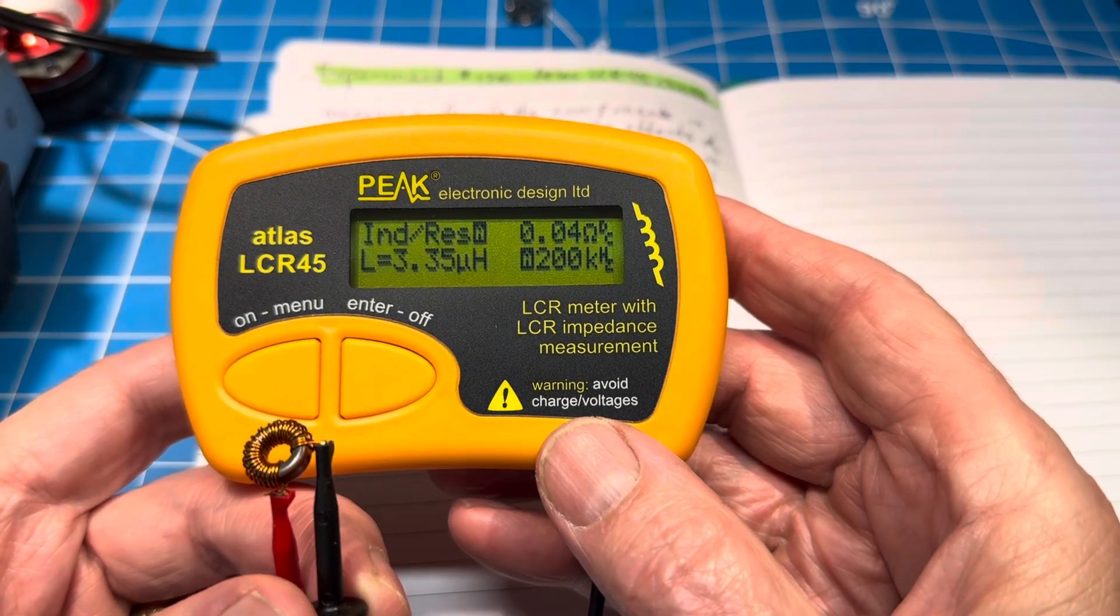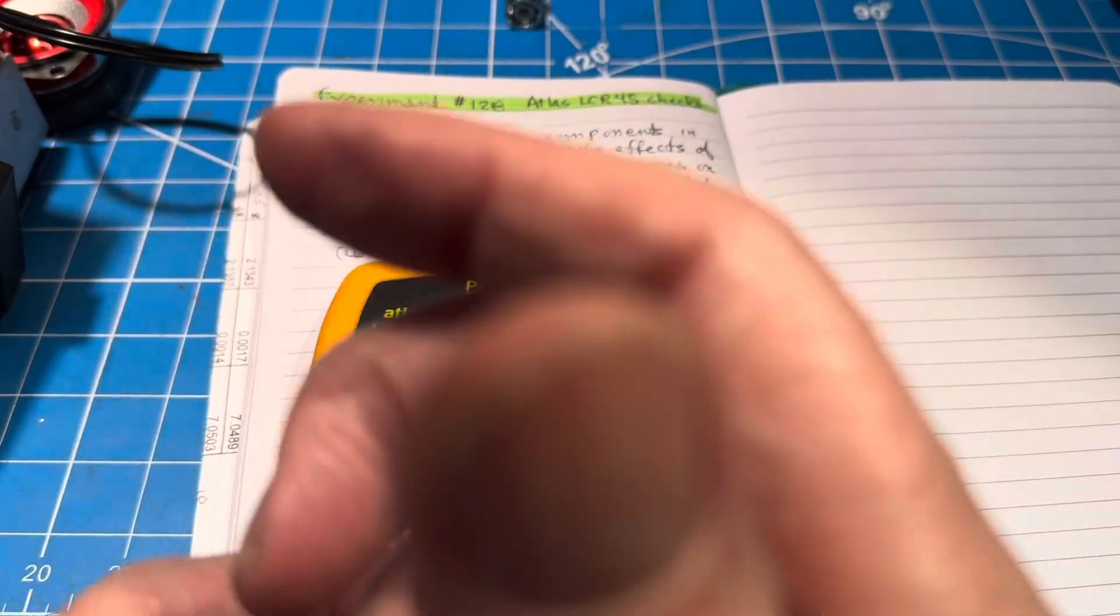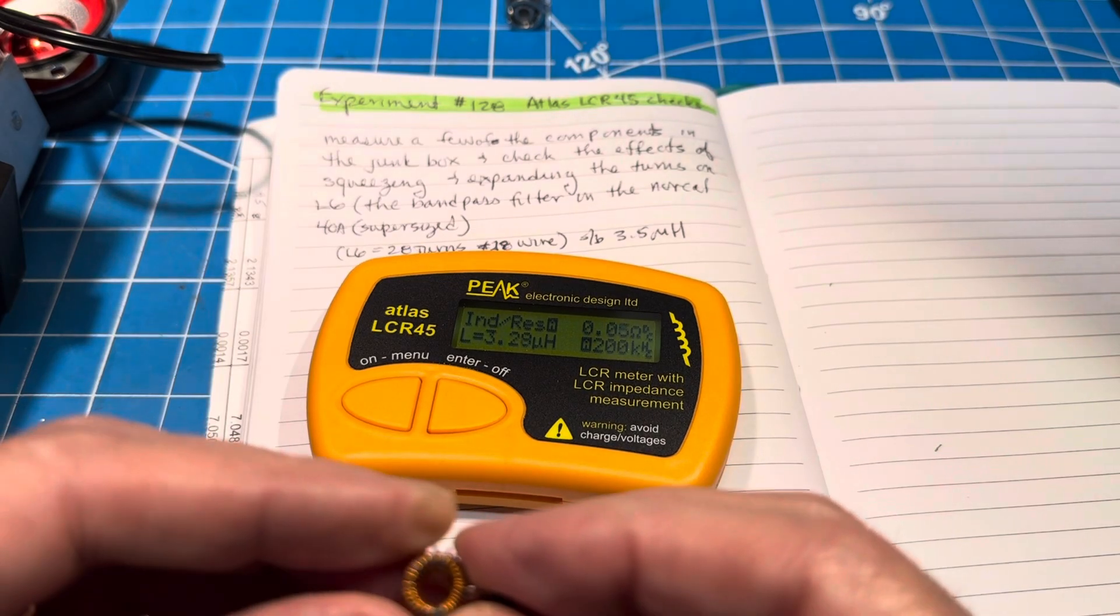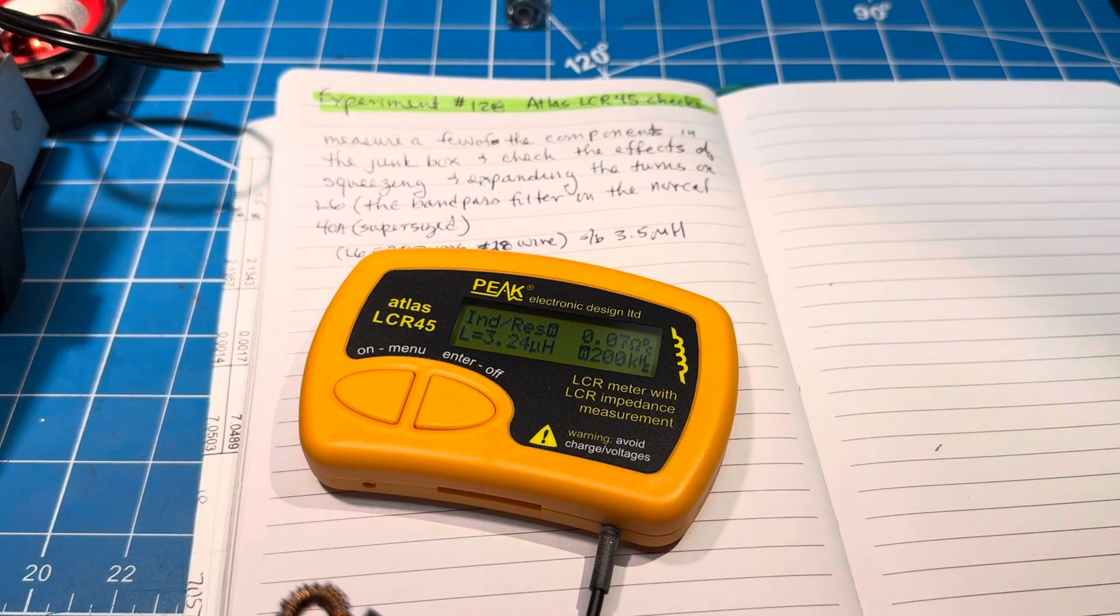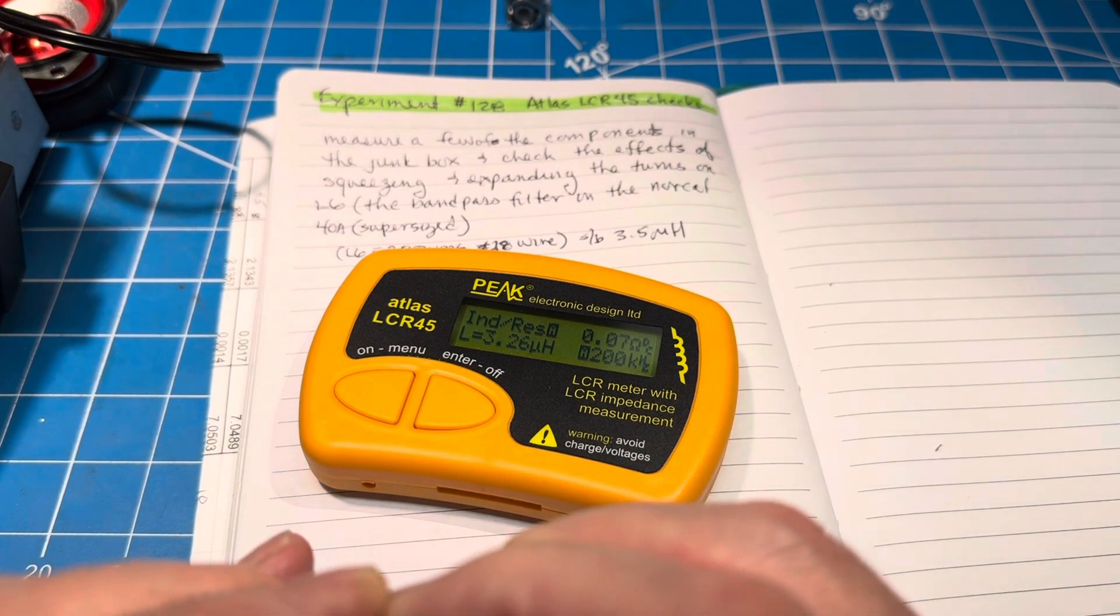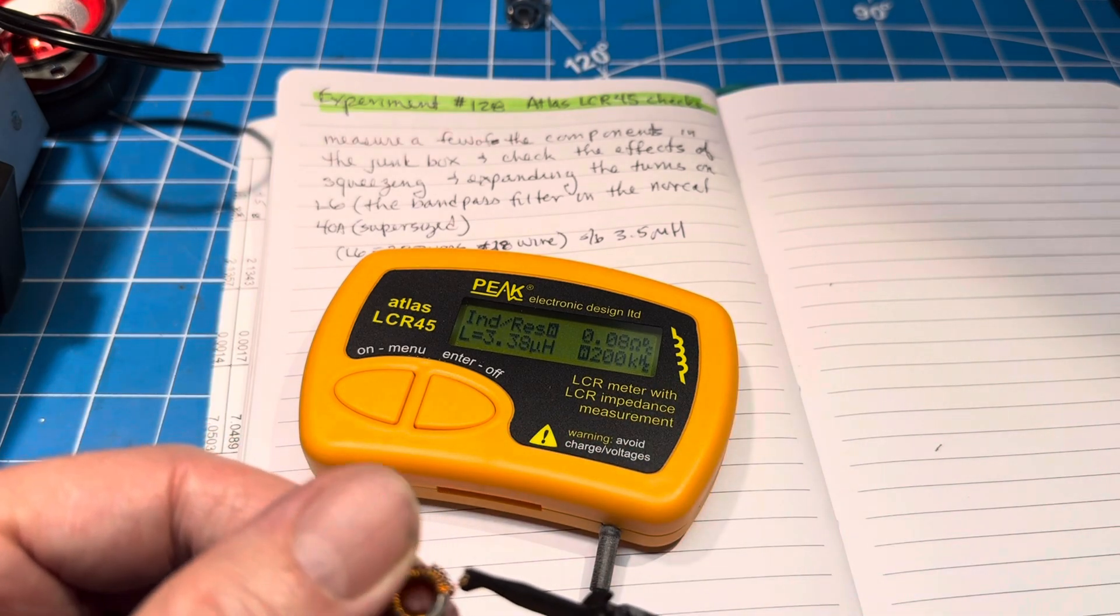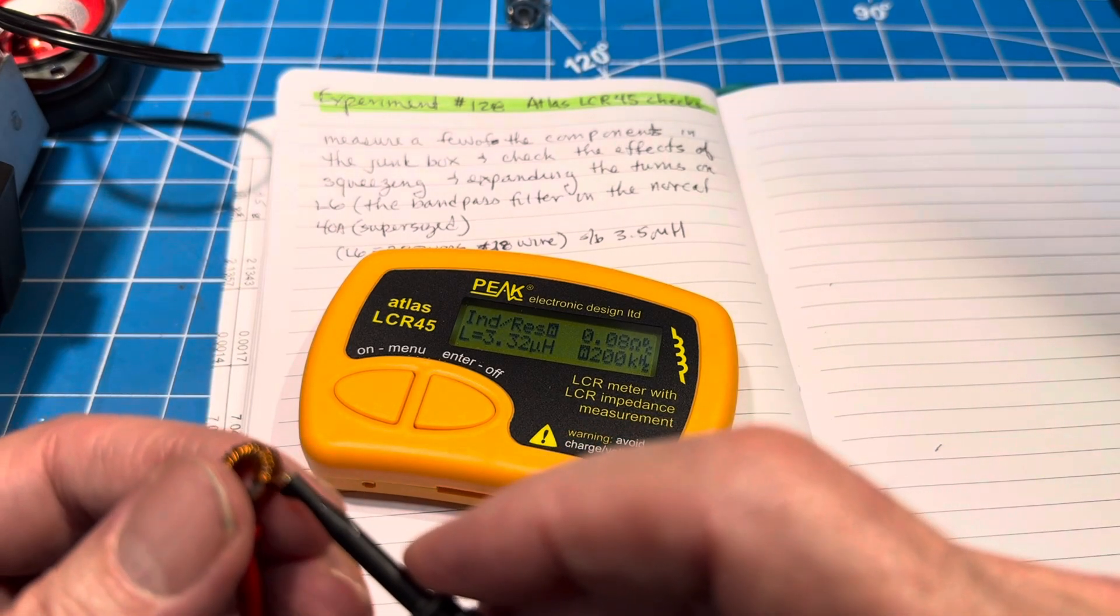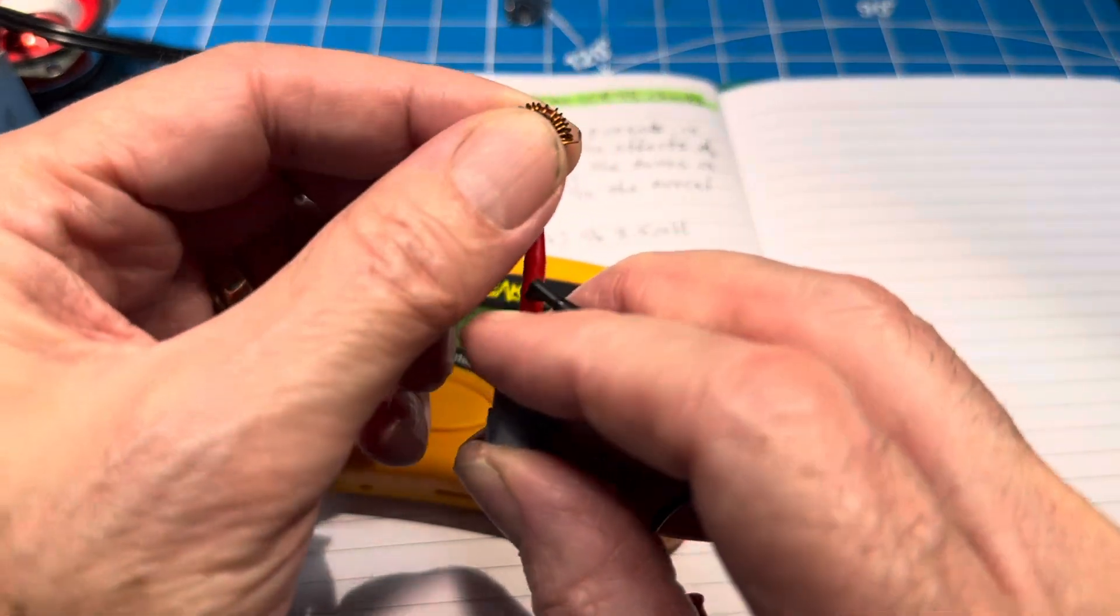So we didn't go up a lot. If I open it up manually while we're here, we're at 3.36, and now we're down to 3.24. So if I'm supposed to be at 3.5, we're not getting there by doing this squeezing. So I may add a couple of turns and see if we get to 3.5 for the measurement, or for the value in that filter for the NorCal 40a.